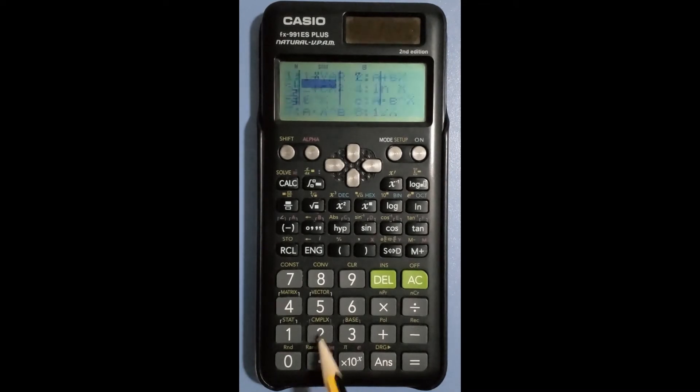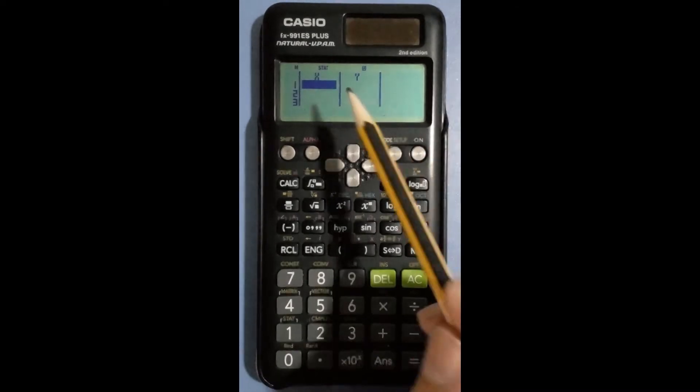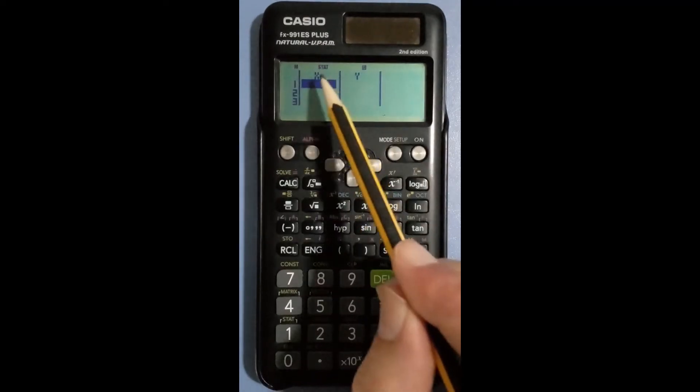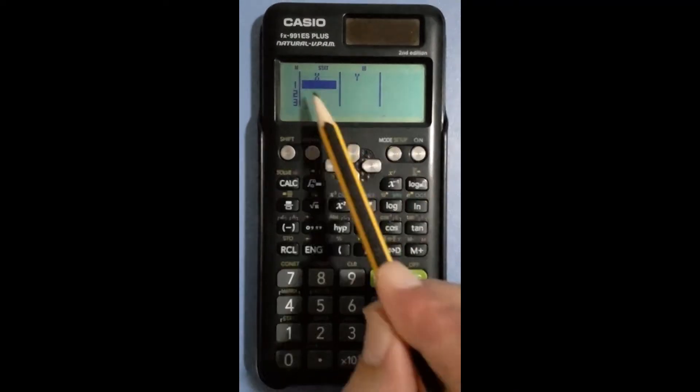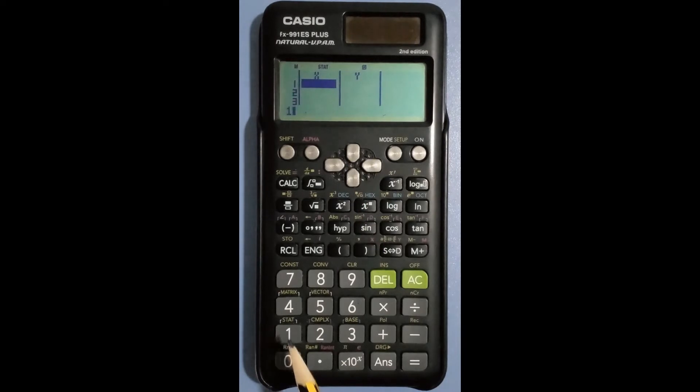Two columns will appear to enter different values for X and Y. Let us start with X. Enter values from 1 to 9. Press the 1 button then equal button, press the 2 button then equal button, press the 3 button then equal button, and so on.